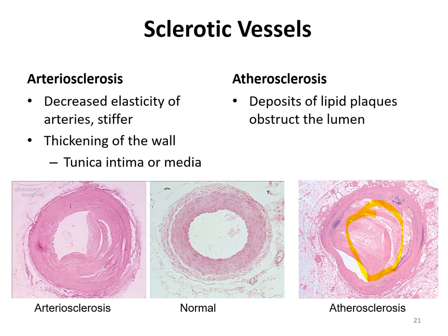To clarify the difference: in arteriosclerosis, it's the wall — specifically the tunica interna or media — that has thickened, causing narrowing of the lumen. In the case of atherosclerosis, a lipid plaque first initiates obstruction of the lumen, and you may also get some thickening of the wall, but that's not necessarily required.